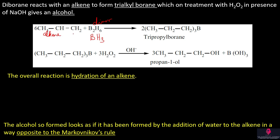First step: since the alkene is a double-bonded compound, there is an addition reaction. This is the addition of borane — addition of diborane. The resulting product is a trialkyl compound. If you take any alkene, you will get the particular trialkyl borane.